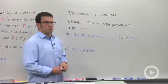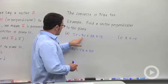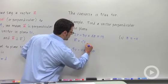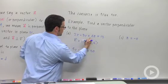Find a vector perpendicular to the plane. These coefficients give it to you. Vector n would be 2, negative 3, 6, these coefficients.